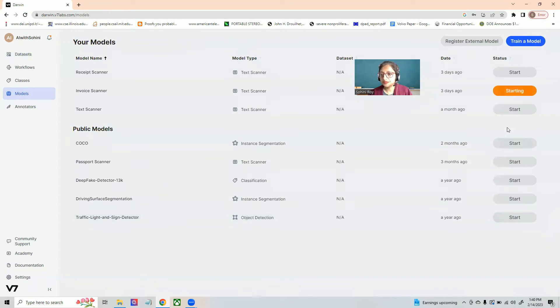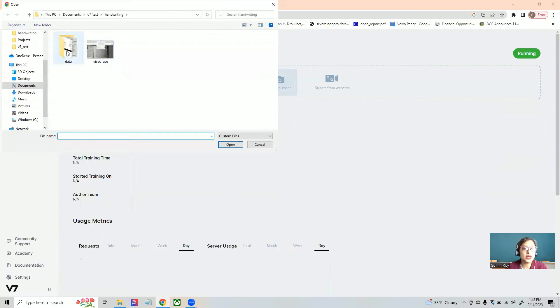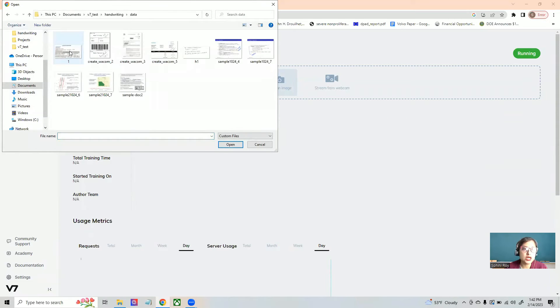So let's start with the invoice scanner. And here I'm just going to click start, the model is ready, you will see that it is running. And let's go into the model itself. And what we can do here is we can upload an image and check the outcome on it.